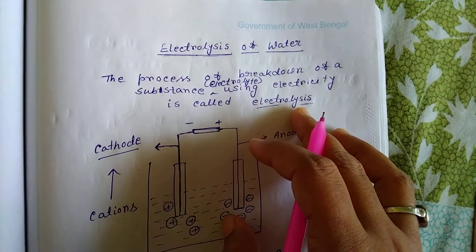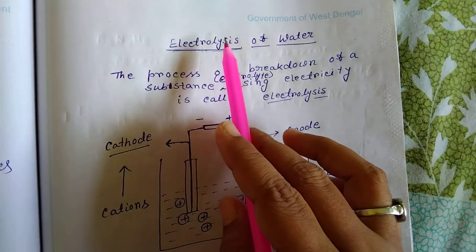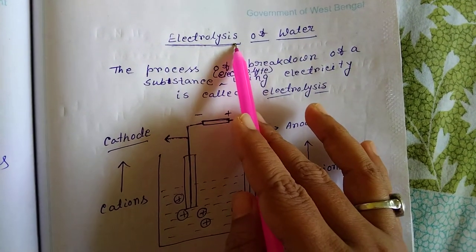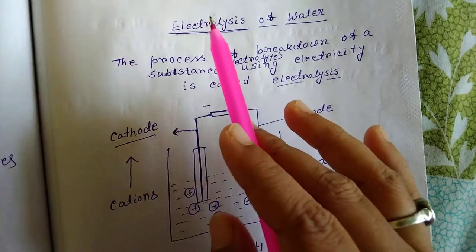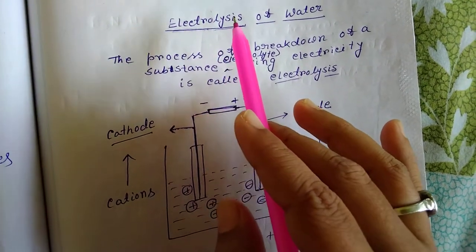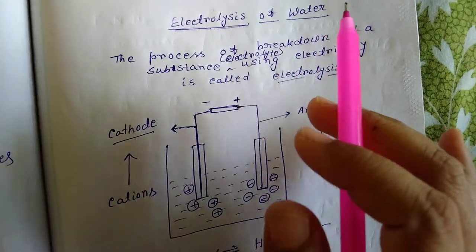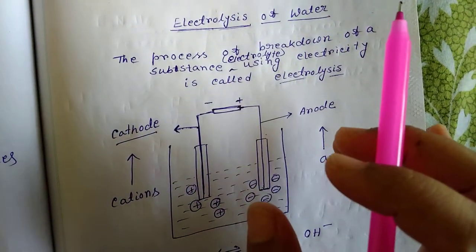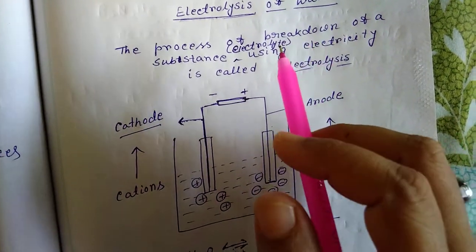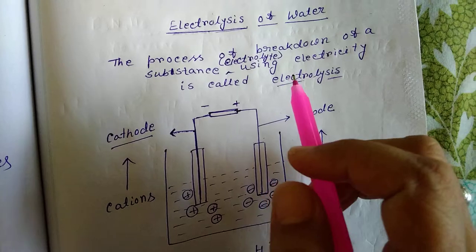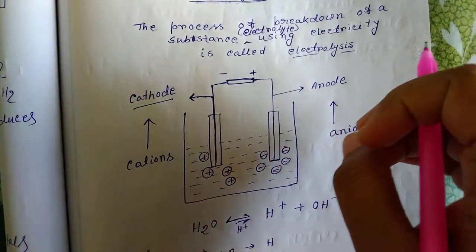Today I am going to discuss electrolysis of water. This word 'electrolysis' comes from 'electro' plus 'lysis'. Electro means electricity and lysis means breakdown. So the process of breakdown of a substance — that is, an electrolyte — using electricity is called electrolysis. Here we discuss about the electrolysis of water, that means what chemical reaction occurs.